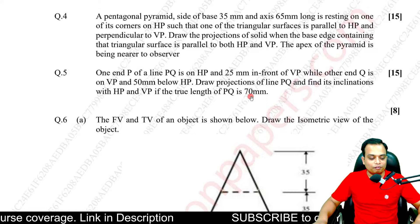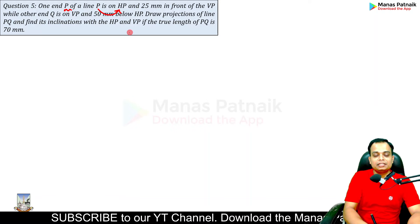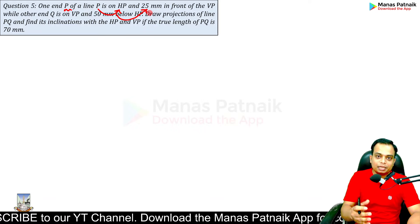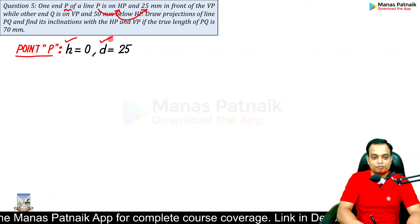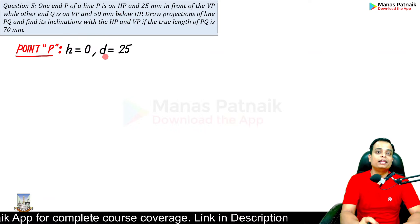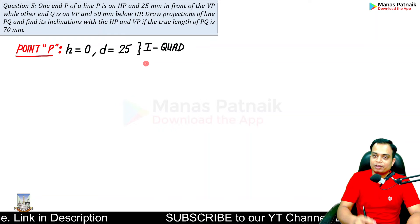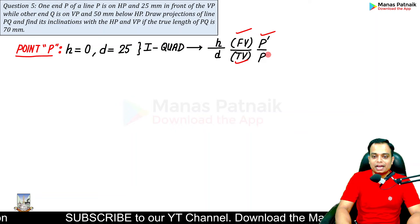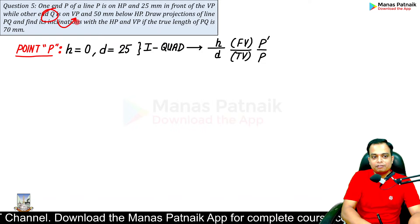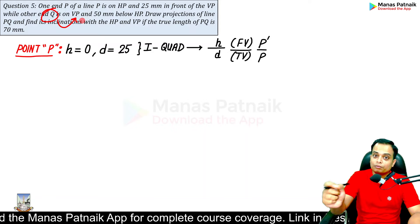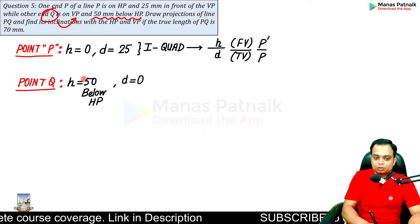Let's write down all the data given. For endpoint P: it is in the HP, and 25 mm in front of the VP — so it is a case of the first quadrant. Distance from HP is represented by h and distance from VP by d; if you are not aware of these notations, watch my videos on projection of points. For endpoint Q: it is in the VP, so its distance from VP is zero, meaning d equals zero, and it is 50 mm below HP.